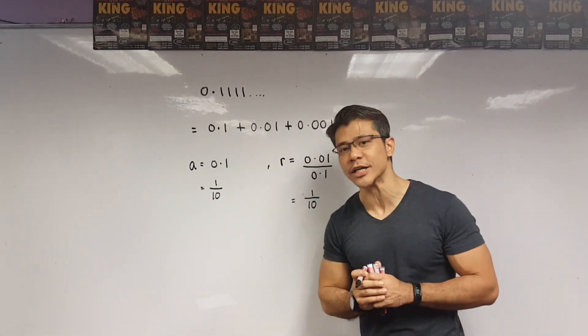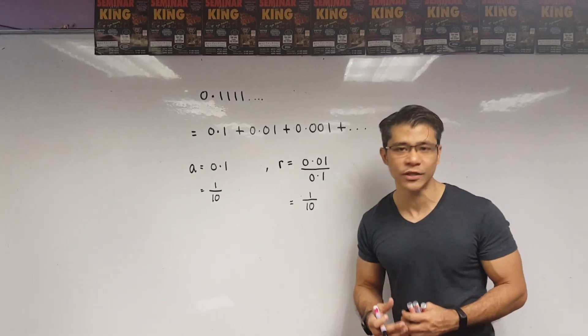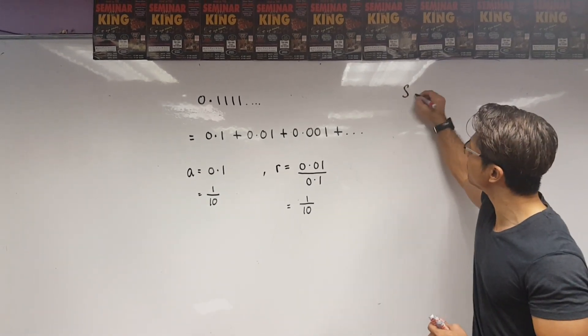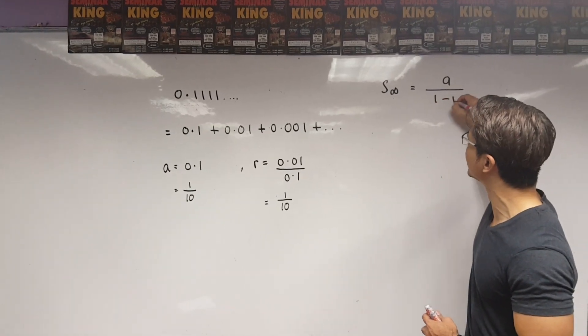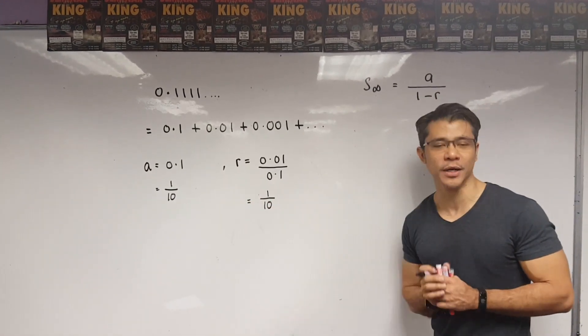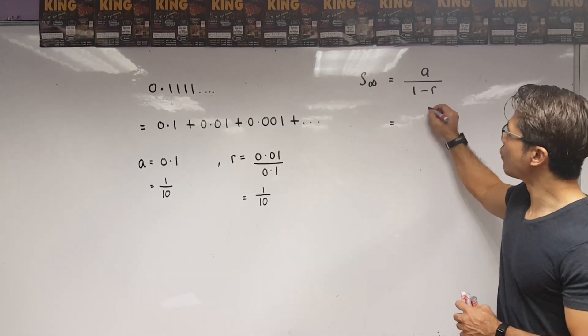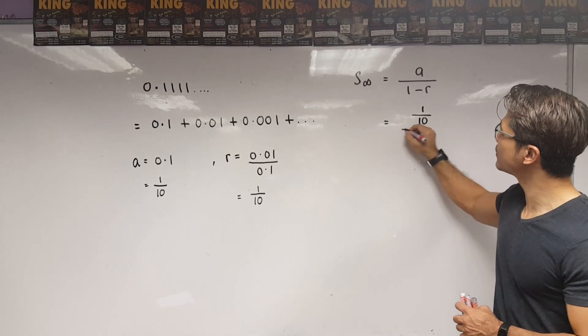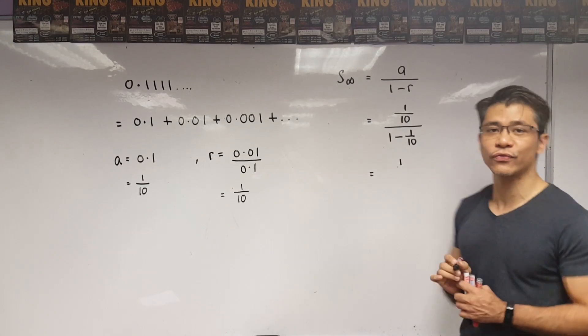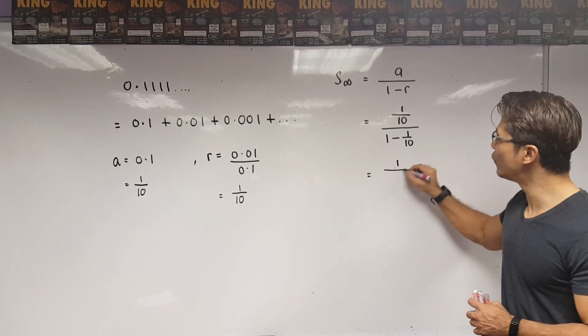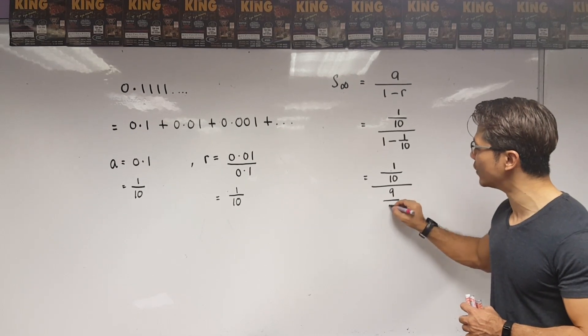Now, to convert this decimal number into a fraction, we need to use the sum to infinity formula. So, we have sum to infinity equals A over 1 minus R. Now, I just replace the A number. I replace the R number giving me this 1 over 10 over 1 minus 1 over 10.